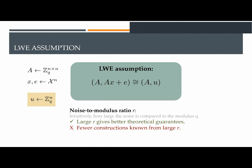Another useful parameter is what's called noise-to-modulus ratio, which intuitively measures how big the noise is compared to the modulus q. Large noise-to-modulus ratio gives better theoretical guarantees, but it's harder to construct protocols with large noise-to-modulus ratio.